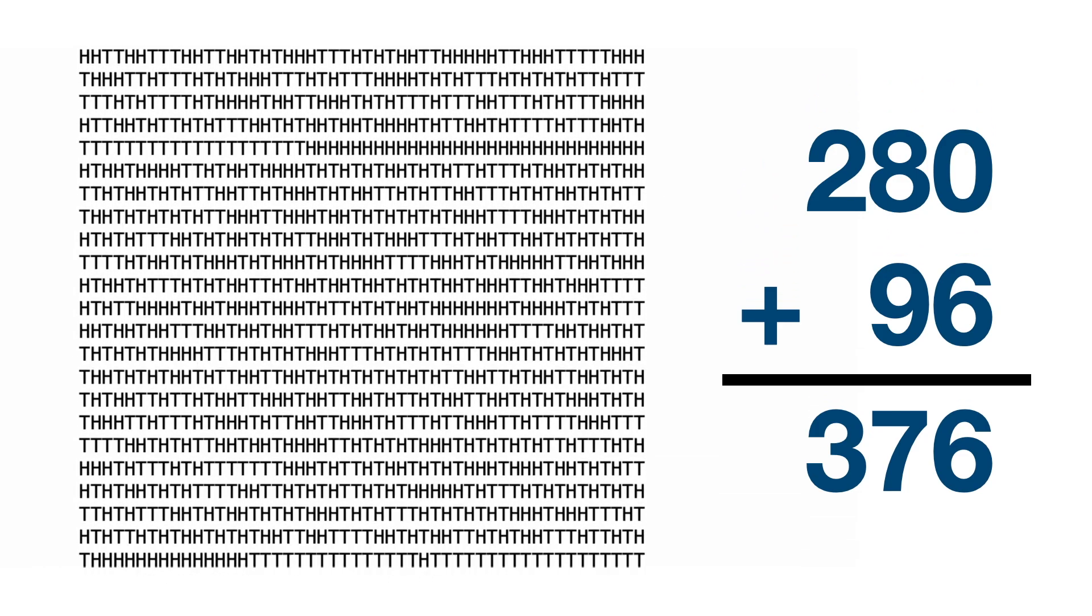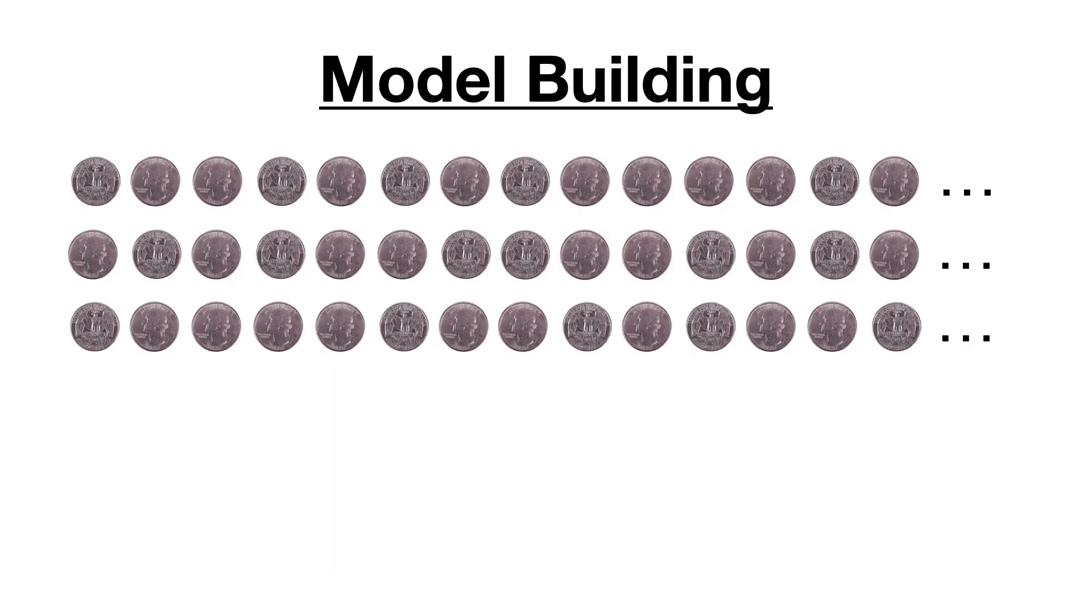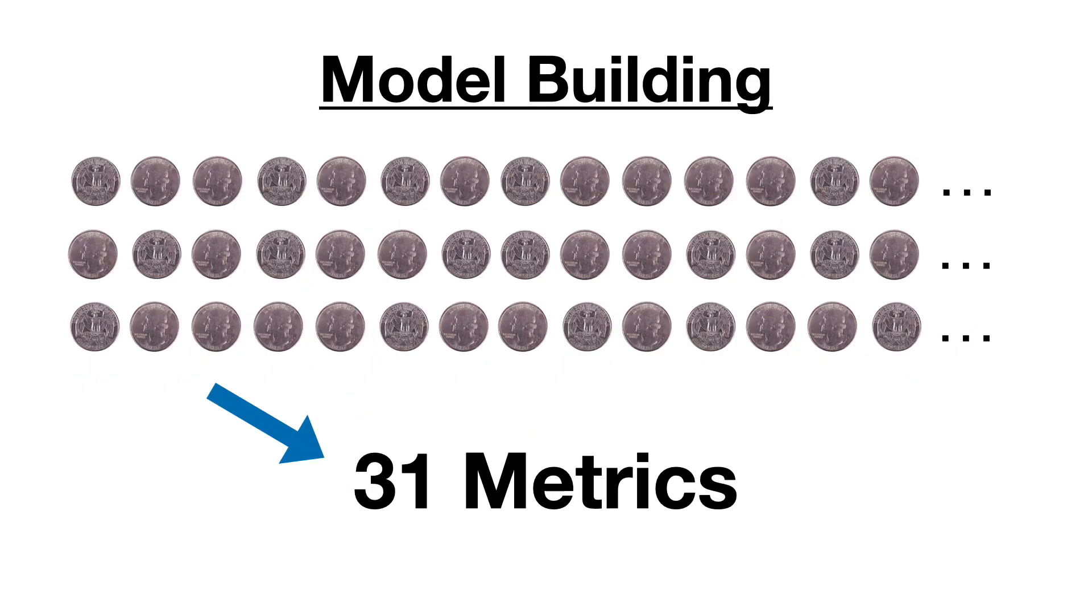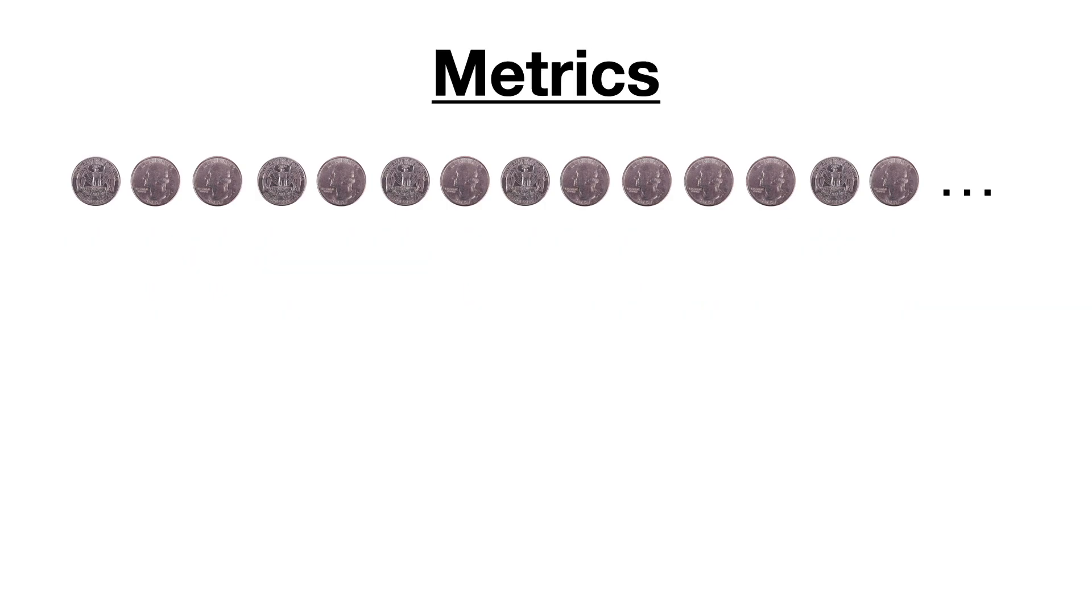So now that the data has been collected, it's time to start building the model that will try to distinguish a truly random sequence from one made up by a person. I wanted to create a bunch of metrics to describe the sequences of coin flips, such as the longest streak characteristic that we saw earlier. I ended up coming up with 31 of these metrics, which I hoped would be enough to make this model decently accurate. Here's a couple of the metrics that I came up with.